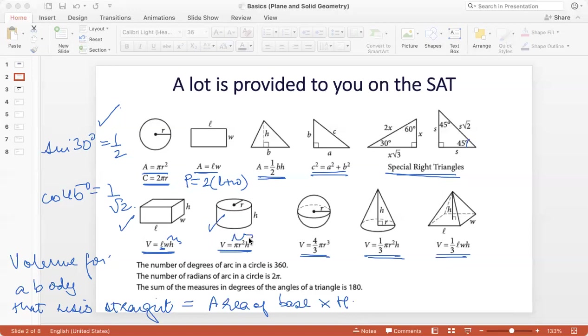Now volume for a body that does not rise straight, but converges to a point. For example, here and here. Here you see that the height, the way the body is rising is not perpendicular to the base, but is converging to the point. That volume is one third area of the base multiplied by the height. And you can see that's exactly what happens in both cases.